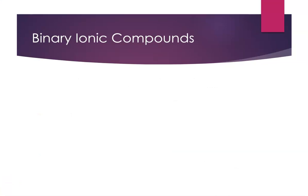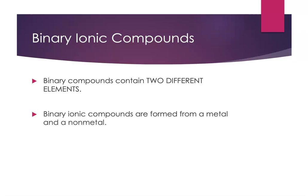Binary compounds contain two different elements — that's all the word binary means. I'm not saying how many atoms of each element are present; I'm just saying there are two different elements in the compound. When we're talking about binary ionic compounds, we're talking about compounds formed from a metal and a non-metal. Metals tend to lose electrons and form cations (positively charged), and non-metals tend to gain electrons and form anions (negatively charged).